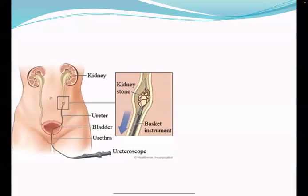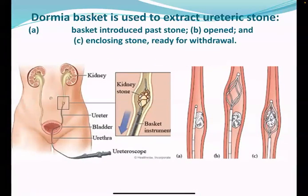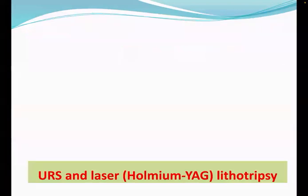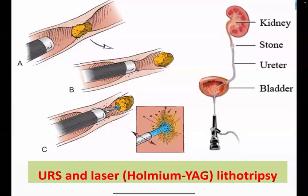When the stone is fragmented into smaller pieces or is already small, we catch it with a basket or forcep and bring it out. If the stone is larger, we can break it by pneumatic rod or laser energy. The laser energy we use is Holmium YAG laser — there are different lasers for different procedures, but for stone breaking we use Holmium YAG laser. It turns the stone into dust, and larger fragments are removed by a Dormia basket or forcep.